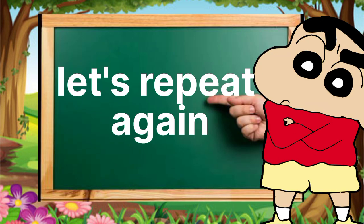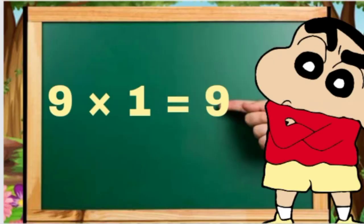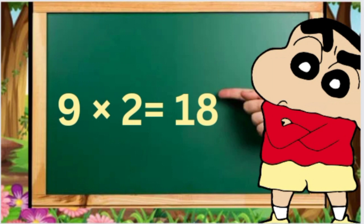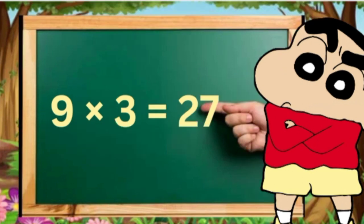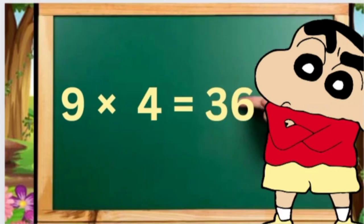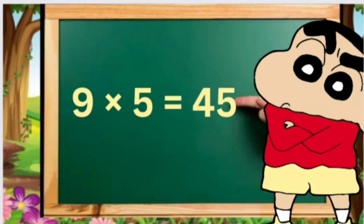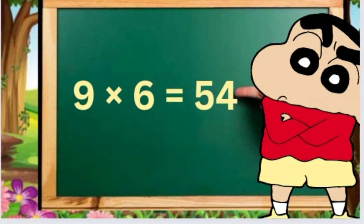Let's repeat again. Nine ones are nine, nine twos are eighteen, nine threes are twenty-seven, nine fours are thirty-six, nine fives are forty-five, nine sixes are fifty-four.